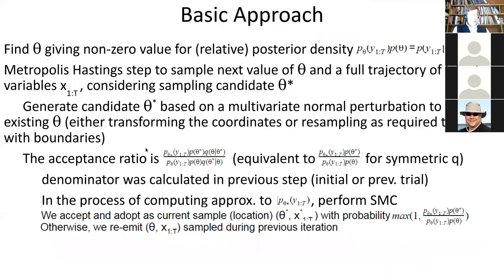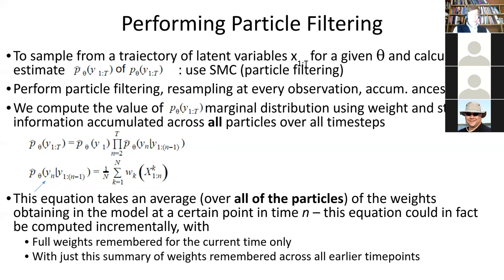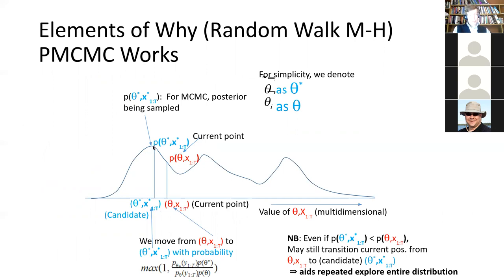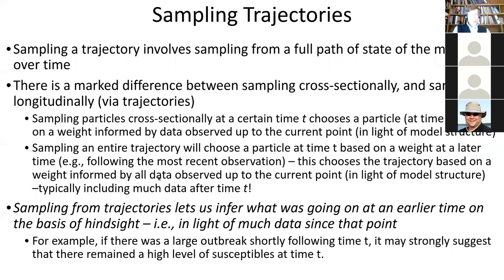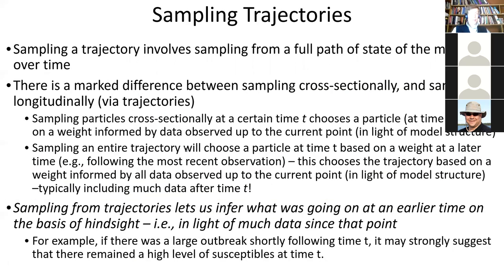Each parameter sample is accompanied by a sample of the latent state — the story of what's happened over time. At time zero, so many susceptible, infected, exposed. At time one, so many susceptible, exposed, infected. Particle filtering computes the posterior value for this data and sample trajectory, allowing you to compute what the probability is and compare the two when you accept or reject. It's not obvious, but performing particle filtering allows you to compute the information needed for this value. To sample from the latent state and compute this value, you need to perform particle filtering.